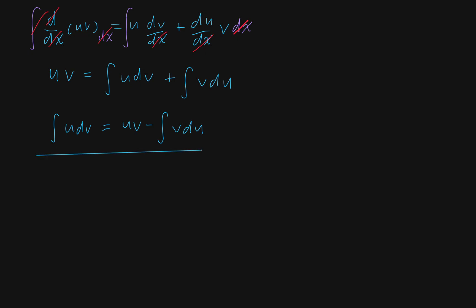You choose your u and dv from the product and apply this formula to simplify the integral. But sometimes you have to apply integration by parts multiple times, which can be very annoying and takes a lot of time. There is actually a method to do repeated integration by parts very quickly — it's probably easier to remember than the normal formula. It uses a table, and it's called the tabular or DI method.